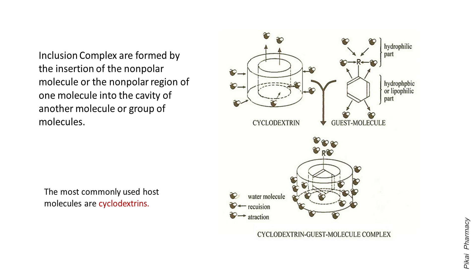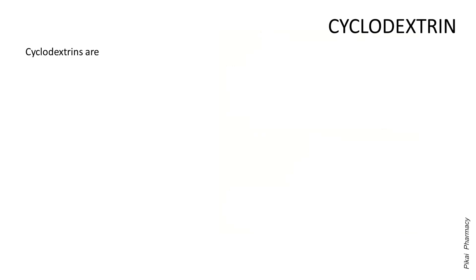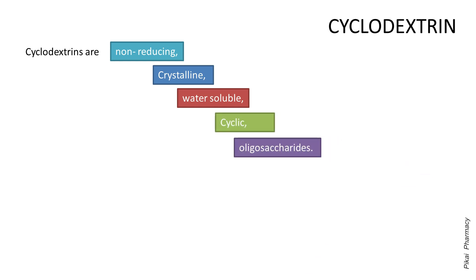Together the non-polar molecule which has poor water solubility and the molecule with the cavity, that is the host molecule, form an inclusion complex. The most commonly used host molecules are cyclodextrins. Cyclodextrins are non-reducing crystalline water-soluble cyclic oligosaccharides consisting of glucose monomers arranged in a donut-shaped ring.